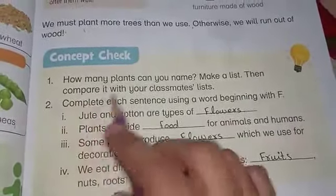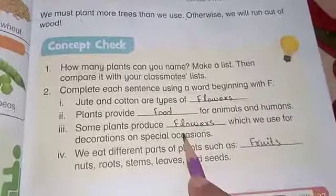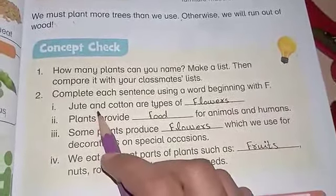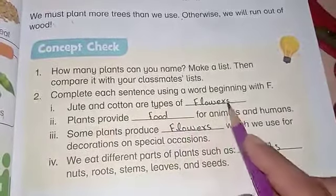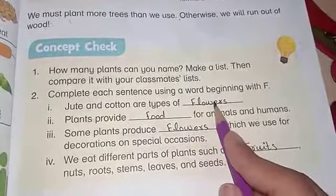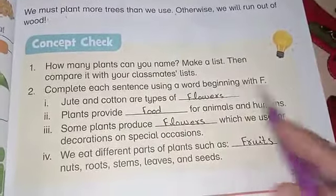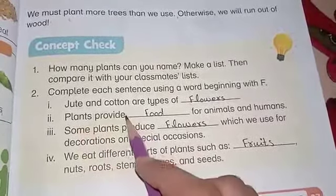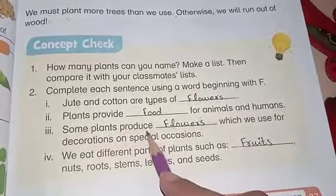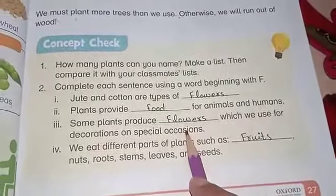Complete each sentence using a word beginning with F — یعنی ہر sentence کو complete کریں F سے اپنے words start کرتے ہوئے۔ Number 1: Jute and cotton are types of — answer is 'fibers'. Number 2: Plants provide — for animals and humans — answer is 'food'. Plants provide food for animals and humans.